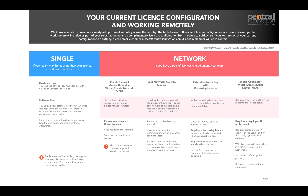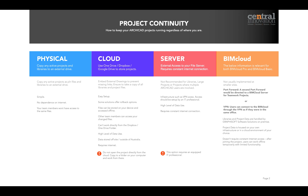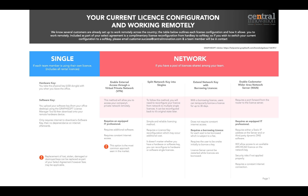The first document we'll cover today will talk about current license configurations and working remotely, and the second document will talk about project continuity options. When we purchase an ARCHICAD license we either purchase a hardware key, which is like a physical USB dongle, or a software key which we upload and download using the Graphisoft License Manager tool.